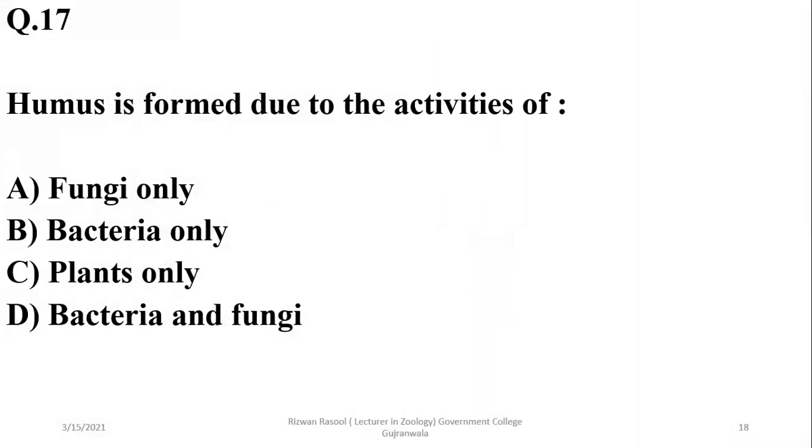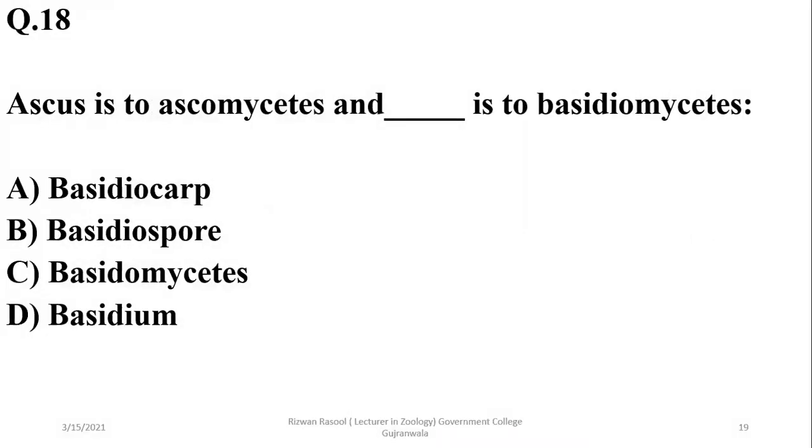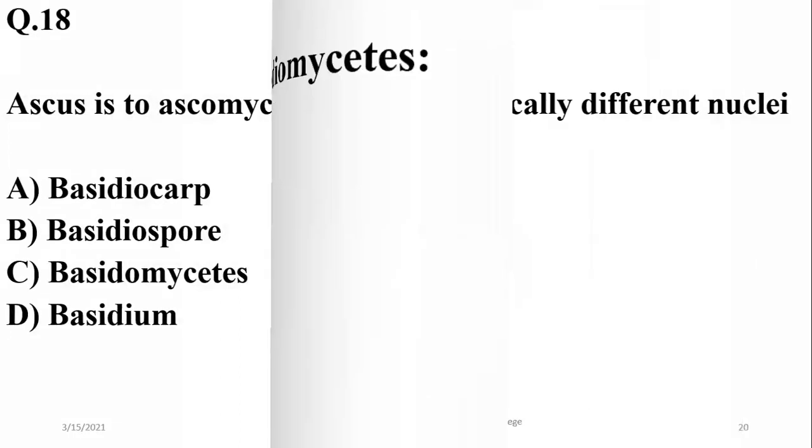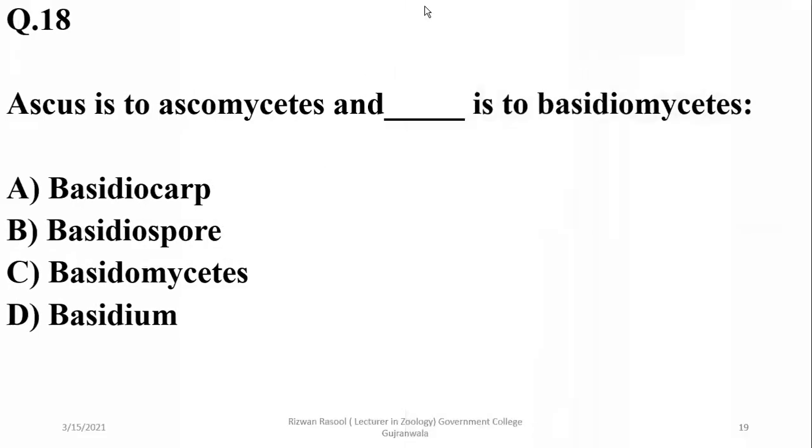Humus is formed due to the activities of bacteria as well as fungi because both groups are decomposers. And ascus is to ascomycete as basidium is to basidiomycete. They are parallel structures, so the right option in this case is D.